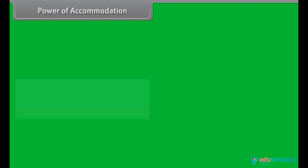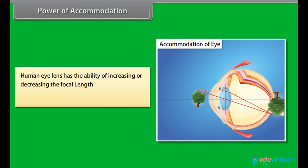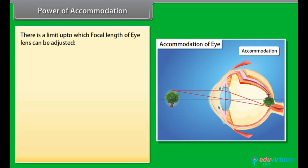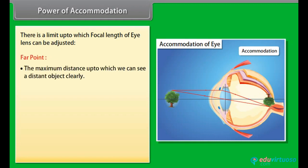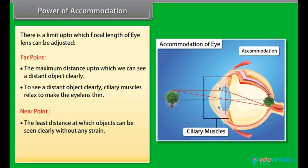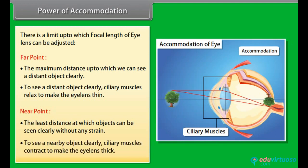Power of Accommodation: The human eye lens has the ability of increasing or decreasing its focal length, which is known as accommodation. Accommodation is achieved with the help of ciliary muscles. There is a limit up to which the focal length of the eye lens can be adjusted. The far point is the maximum distance up to which we can see a distant object clearly; to do so, ciliary muscles relax to make the eye lens thin. The near point is the least distance at which objects can be seen clearly without any strain; to see a nearby object clearly, ciliary muscles contract to make the eye lens thick.